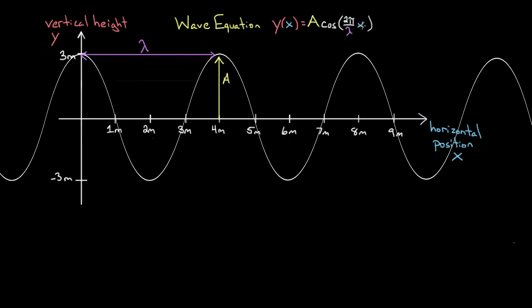That way, if I start at x equals zero, cosine starts at a maximum and I get three. If x has gone all the way to one wavelength — in this case four meters — once I plug in the wavelength for x, that wavelength cancels this wavelength, we get two pi, and the cosine resets. That's what happens for this wave: it should reset after every wavelength. You go another wavelength, it resets. Another wavelength, it resets.